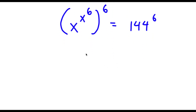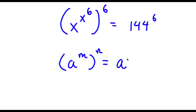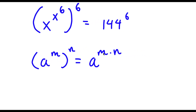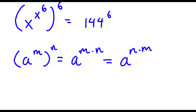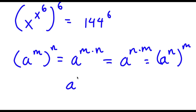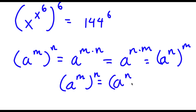Now if I have something in the form a to the power of m to the power of n, this is the same thing as a to the power of m times n. And m and n are interchangeable, meaning it's the same as a to the power of n times m. So a to the power of m to the power of n is equal to a to the power of n to the power of m — these two are the same thing.